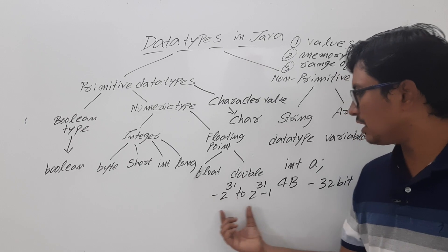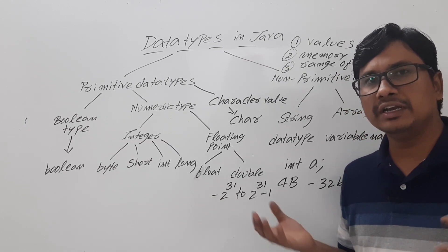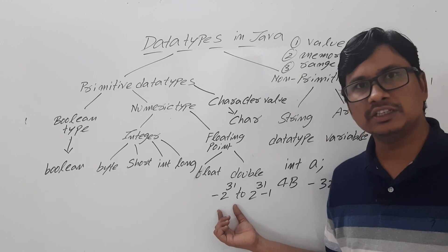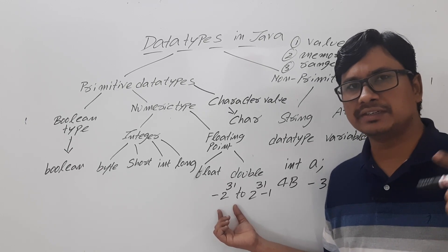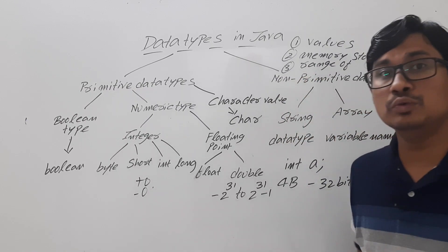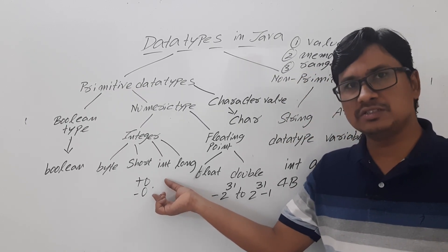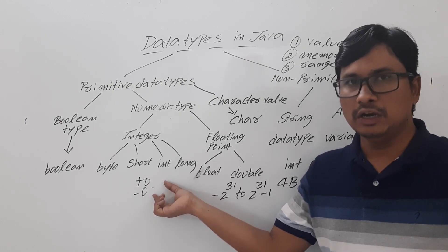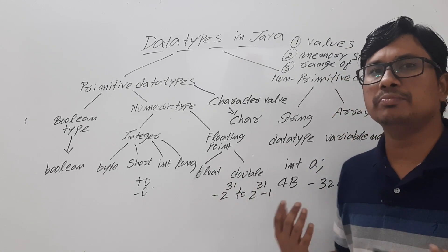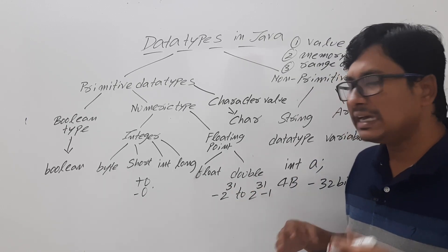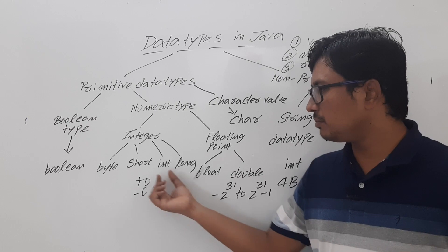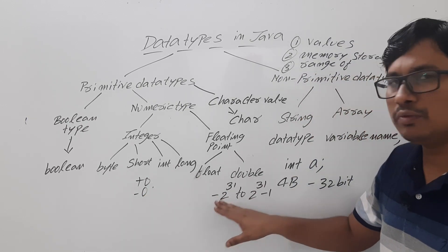This is what we call the two's complement representation. In a computer, every number will be stored in two's complement form. We have sign magnitude representation, one's complement representation, and two's complement representation. In sign magnitude and one's complement, there are limitations — plus 0 and minus 0 are represented in two different forms. However, plus 0 and minus 0 is just 0, so to overcome that, two's complement representation was introduced. Negative numbers are stored in two's complement form; positive numbers have the same representation across all three.